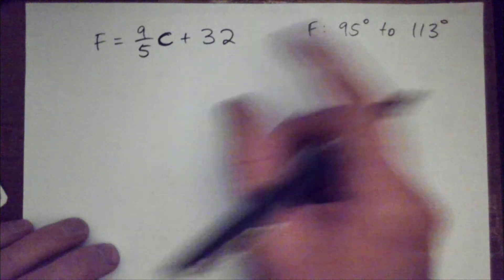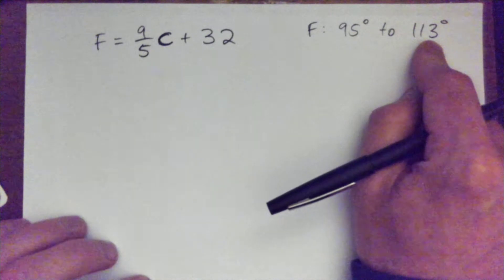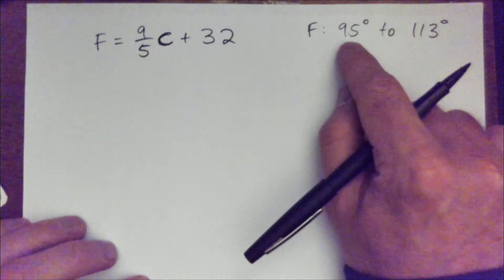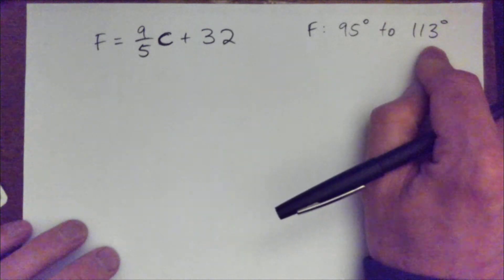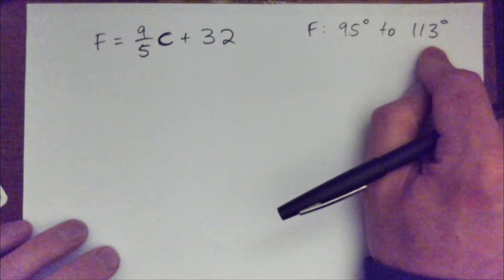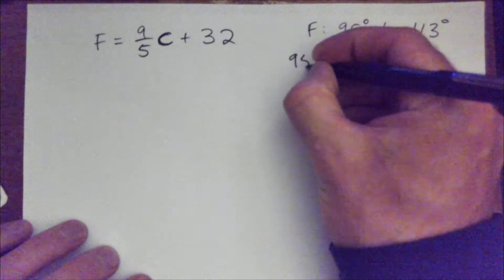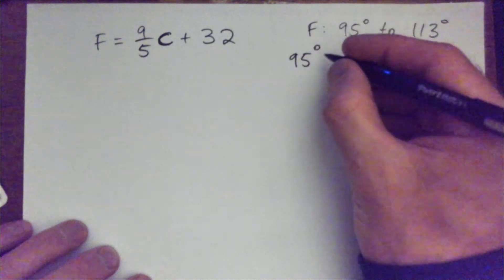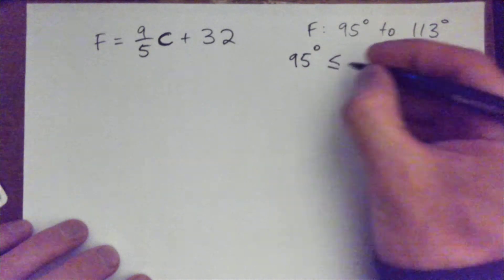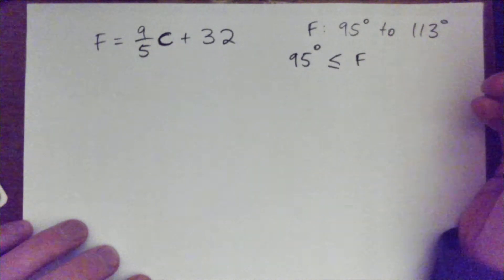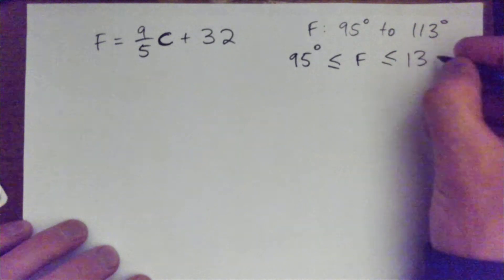So anyway, the Fahrenheit range is 95 degrees to 113 degrees. And what we want to do is find this temperature range in Celsius. So what we actually have — and I'm just doing this for the purpose of using inequalities — 95 degrees is the minimum, and that's less than or equal to the Fahrenheit amount, and that's less than or equal to 113 degrees.